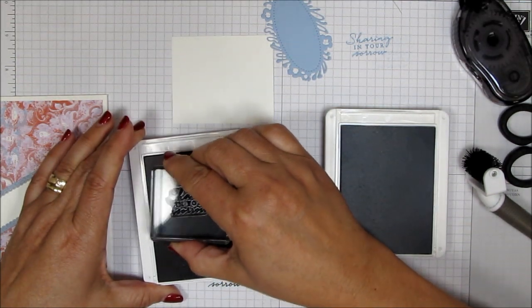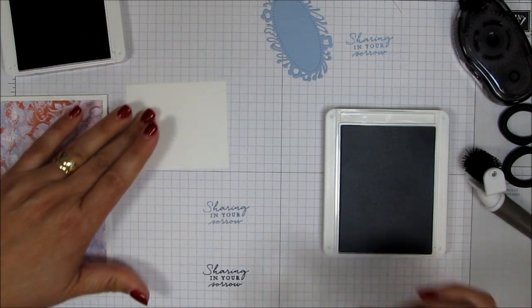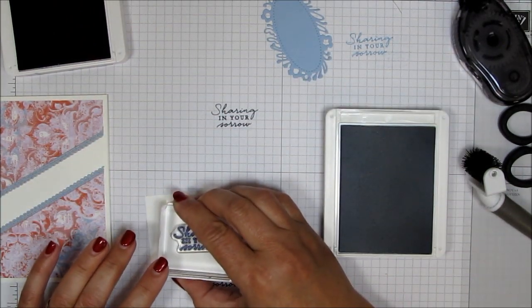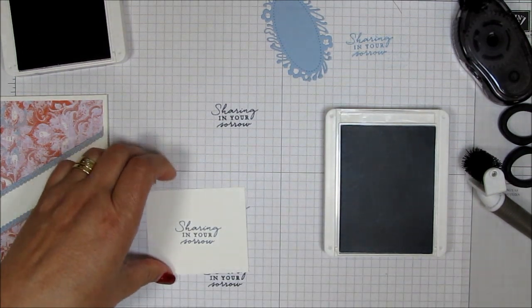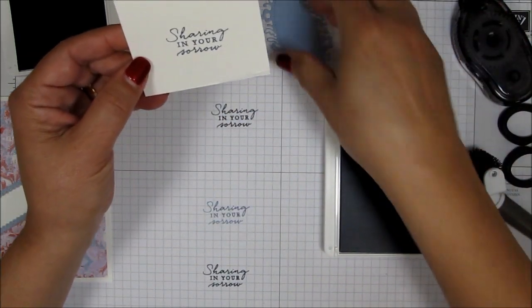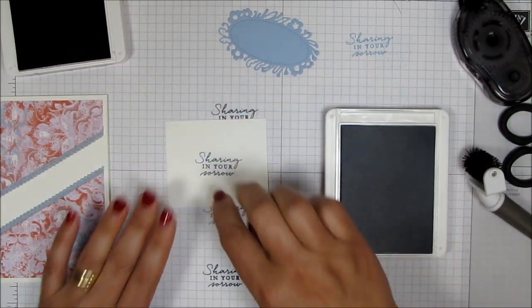So we're going to tap, tap, tap on our ink pad in Night of Navy. We're going to stamp it here and then we're going to stamp it right here. And that's the second generation. And now you can see it better. And it is in the color family of this seaside spray. And so now I'm going to die cut that.